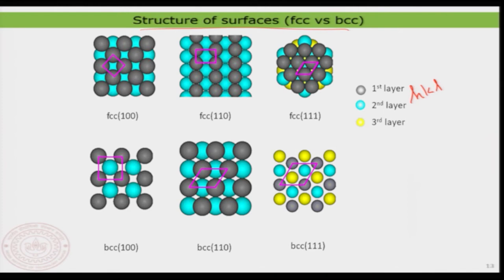When you look at the BCC 111 surface, it is quite different. You need to keep in mind what type of crystal you are looking at — it is not just enough to conclude everything based on the type of plane alone. It is also important to consider whether it is an FCC or BCC crystal. We also looked at many different types of surface formation and discussed stepped surfaces when using higher Miller indices.